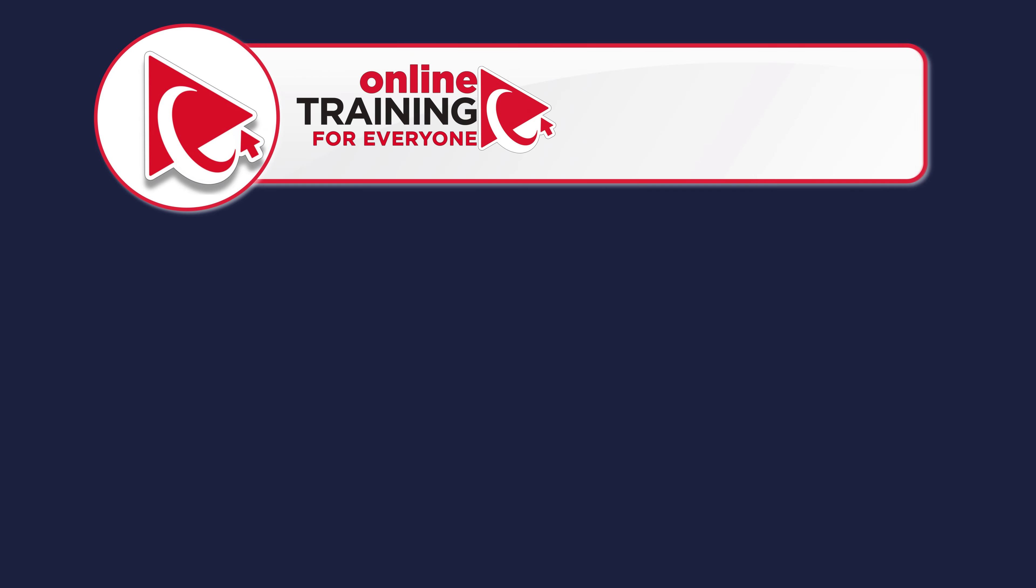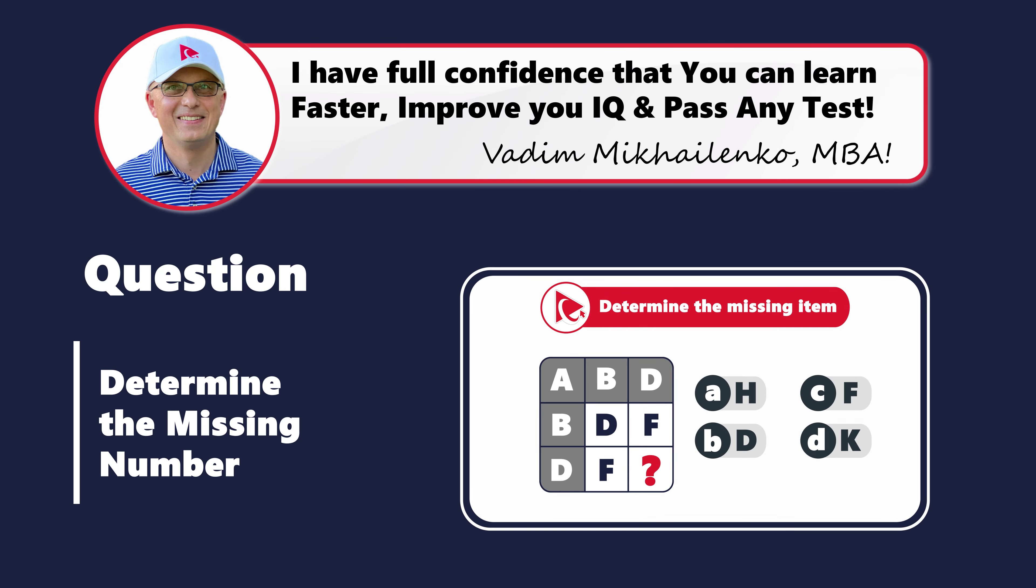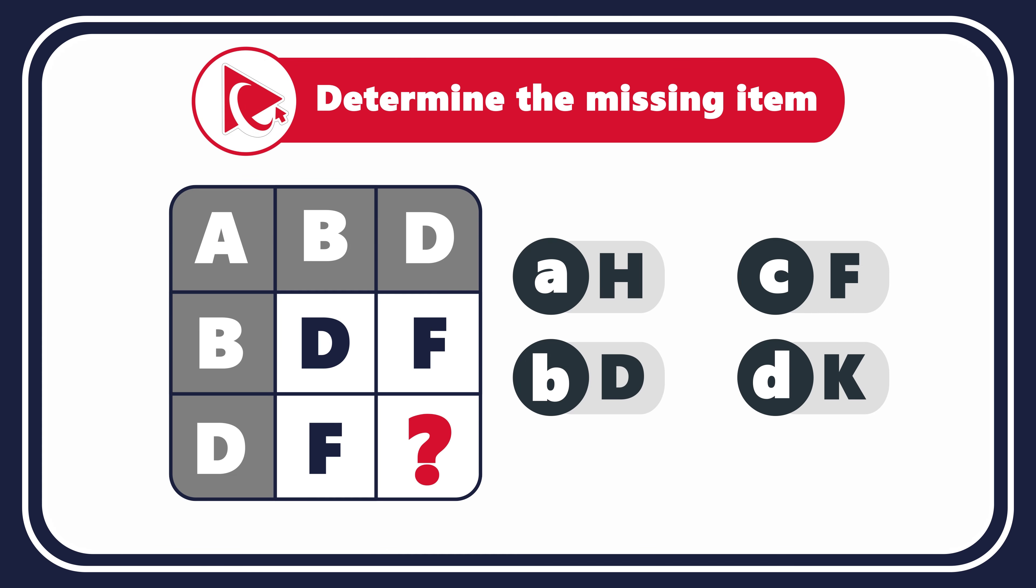Let's dive into the world of letters with this amazingly tricky question that not only evaluates your English alphabet knowledge, but also tests your analytical skills and strategies for tackling challenges effectively. You're presented with a 3x3 matrix. The matrix has letters inside. The first row has letters A, B, and D. The second row has letters B, D, and F. And the third row has letters D, F, and the missing letter.